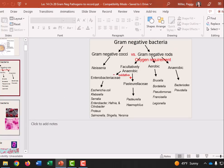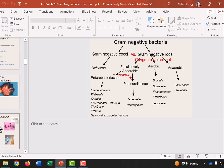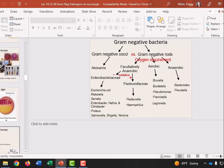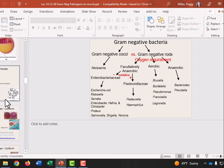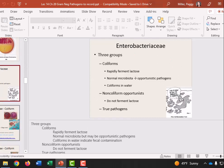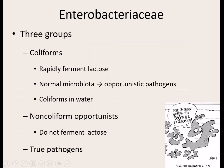They're all digestive tract bacteria, or most of them, or they're somehow tied to the digestive tract. There are so many bacteria in the Enterobacteriaceae group that we still divide them into three groups: we call them coliforms, non-coliforms, and true pathogens.